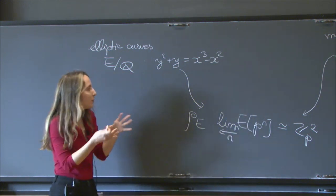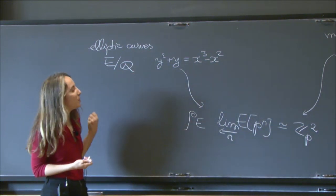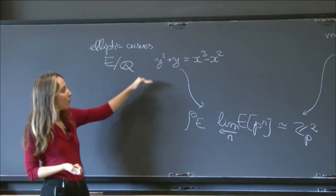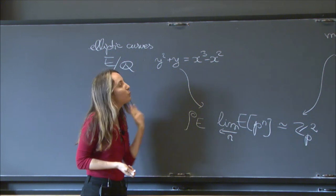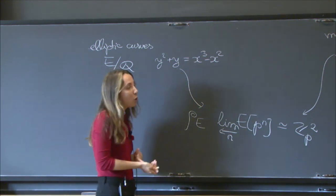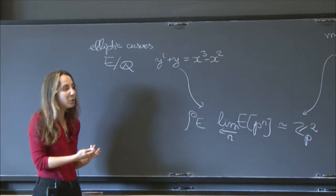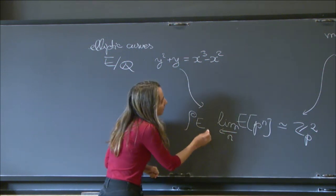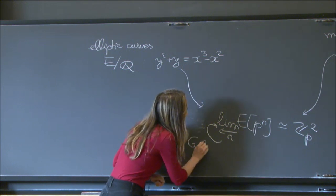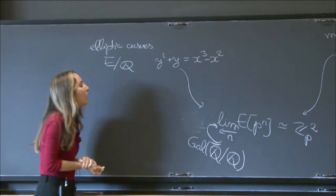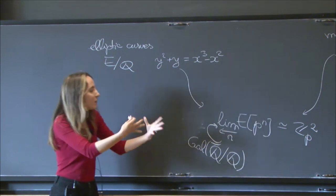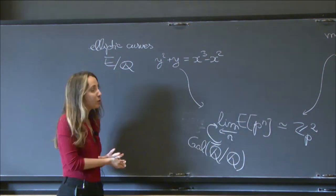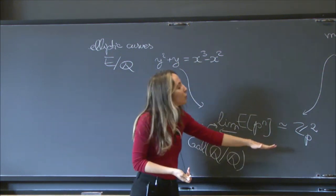There's more structure on this object than just the complex geometry. When you find p^n torsion points, you write down equations with rational coefficients. Solving those equations gives algebraic numbers, so the torsion points are algebraic numbers with many symmetries — like solutions to polynomial equations. Therefore, this inverse limit has an action of the absolute Galois group Gal(Q̄/Q), which you can think of as an inverse limit of Galois groups of finite extensions of Q — a large profinite group.